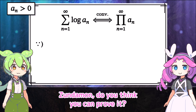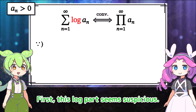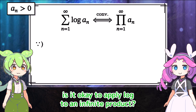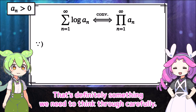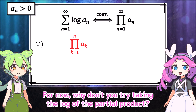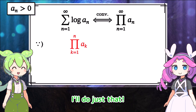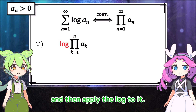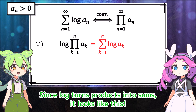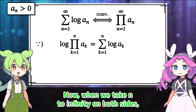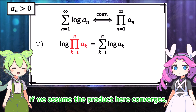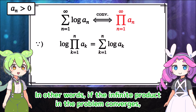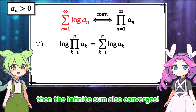Sindamon, do you think you can prove it? I'll give it a shot. But first, this log part seems suspicious. Log has the property of turning products into sums, but is it okay to apply log to an infinite product? That's definitely something we need to think through carefully. For now, why don't you try taking the log of the partial product? Let's consider the partial product up to the nth term, and then apply the log to it. Since log turns products into sums, it looks like this. When we take n to infinity on both sides, if we assume the product here converges, then this sum here will also converge. In other words, if the infinite product in the problem converges, then the infinite sum also converges.